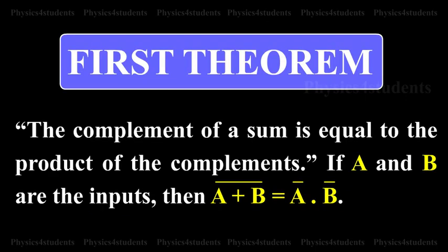The complement of a sum is equal to the product of the complements. If A and B are the input, then A or B, the whole complement, is equal to A complement and B complement.